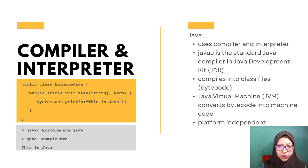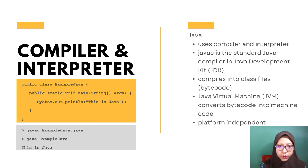For example, this Java source code is saved in a file called ExampleJava.java. On the terminal, the file can be compiled by typing javac followed by the name of the file ExampleJava.java. It will produce the bytecode file called ExampleJava.class. The JVM converts the bytecode into machine code and executes it. 'This is Java' will be displayed.